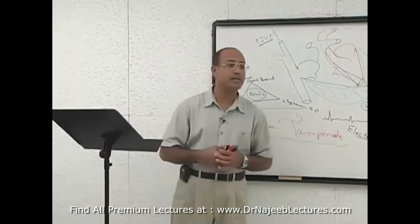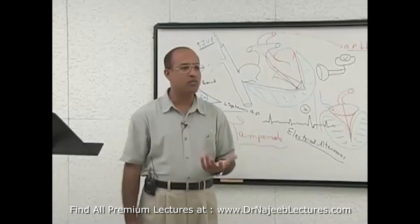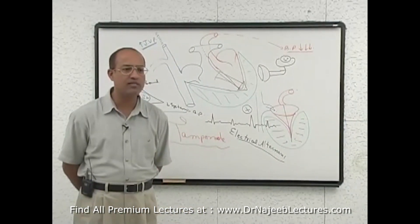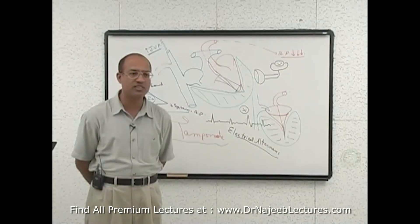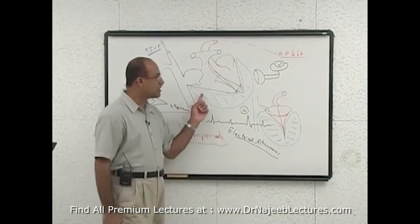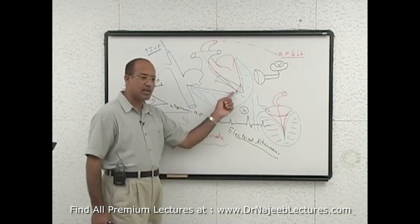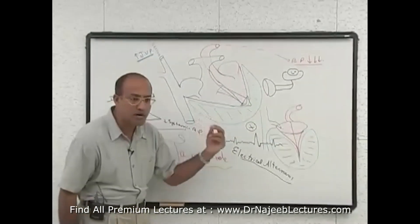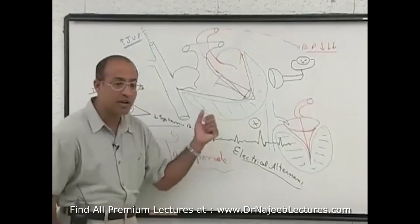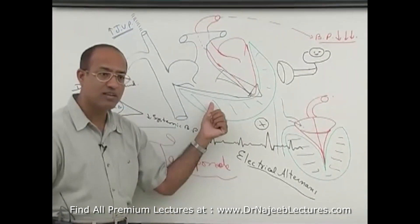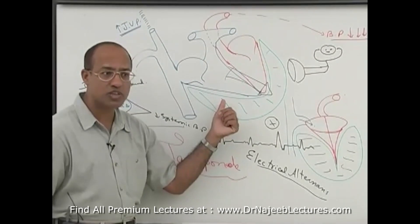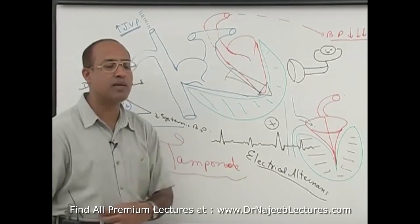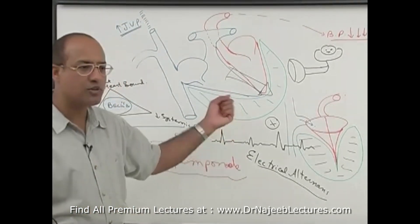Another important point: how much fluid is enough to produce tamponade? It actually depends on the amount of fluid as well as the velocity with which fluid accumulates. Even a small amount of fluid, if rapidly accumulated, does not give the pericardium time to stretch, and it will produce tamponade. Even just 200 to 300 ml of hemopericardium is enough to produce tamponade.